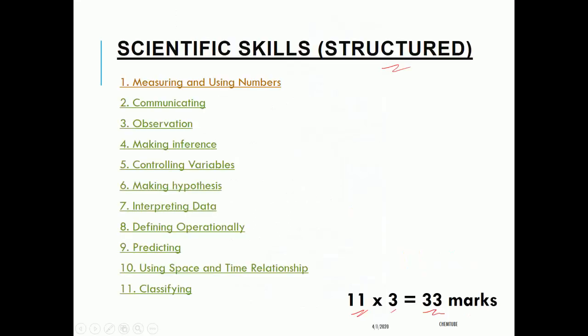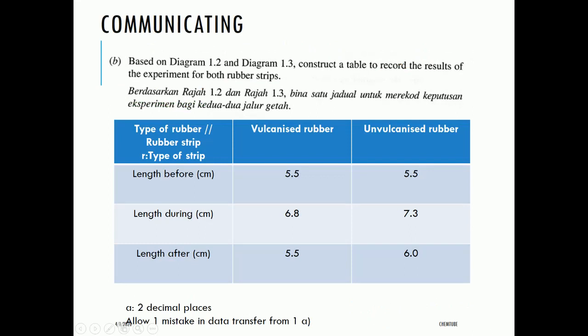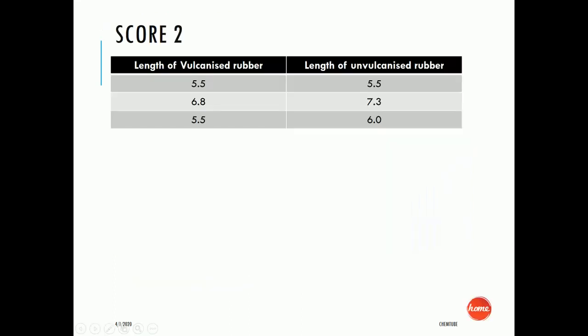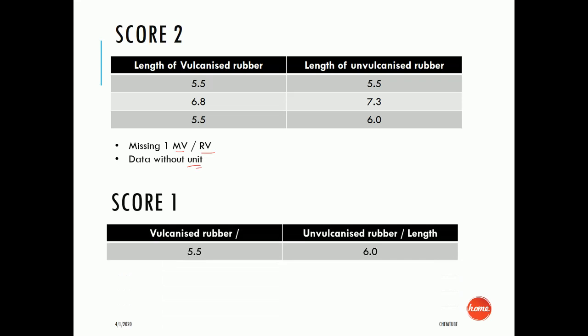The second question is on communication — based on the diagrams, construct a table to record the results of the experiment. The student needs to include the type of rubber or rubber strip, length before (initial), during, and after. All readings must be recorded to one decimal place, with one mistake in data transfer allowed, to get score 3. For score 2, the student misses one manipulated or responding variable. For score 1, the student can only write one of the readings.